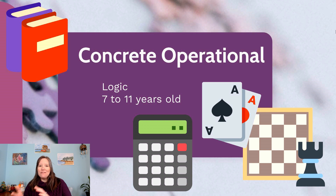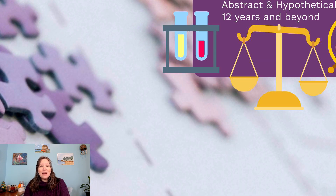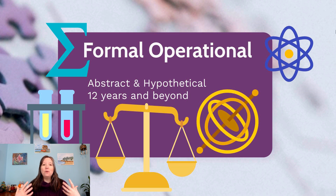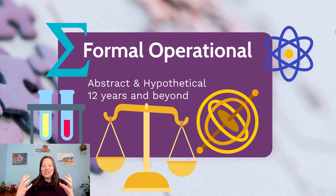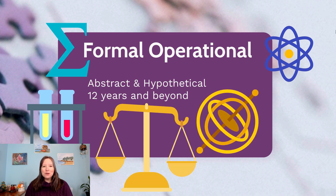Piaget believed the concrete operational stage was really ages seven to eleven. Then when we get beyond age eleven to twelve, this was really the formal operational thought stage. What happens in formal operational is now we can play chess in our head, do math in our head without writing numerals down, and think about really abstract concepts like quantum physics, justice, or human rights. We can do complex hypothesis testing and come up with abstract terms like infinity. Piaget believed formal operational was very advanced, yet that most people around age twelve could start to have a capacity for it.